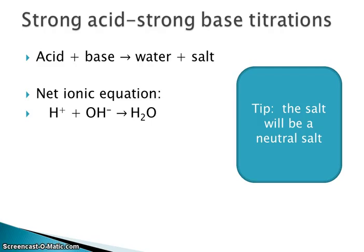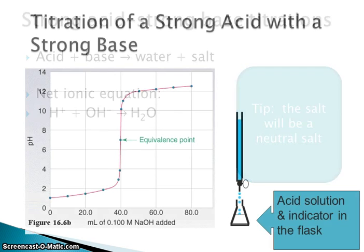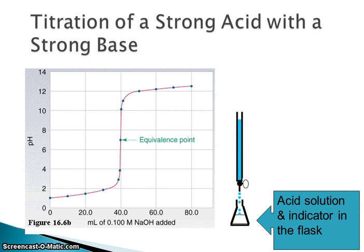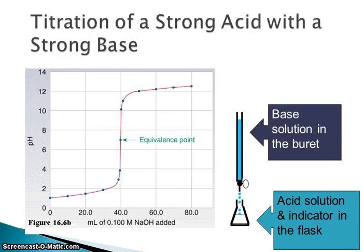In a strong acid-strong base titration, the salt we create will be a neutral salt — it won't affect the pH of the solution at the end. When I say I'm titrating a strong acid, I mean the acid solution and the indicator are in the flask, and the base solution is in the buret. It's important to know this terminology because test questions are sometimes set up assuming you know it.